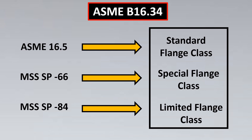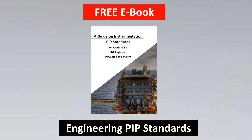For example, if you have a 2-inch 300-pound flange, you could designate it as Special by adding 'SPL' or Limited by adding 'LTD'. However, we almost always go with the Standard class. Even though the Special and Limited classes in 300 rating can accommodate even higher pressure-temperature ratings, the stringent testing requirements mean people usually prefer to stick with ASME B16.5 or B16.47.